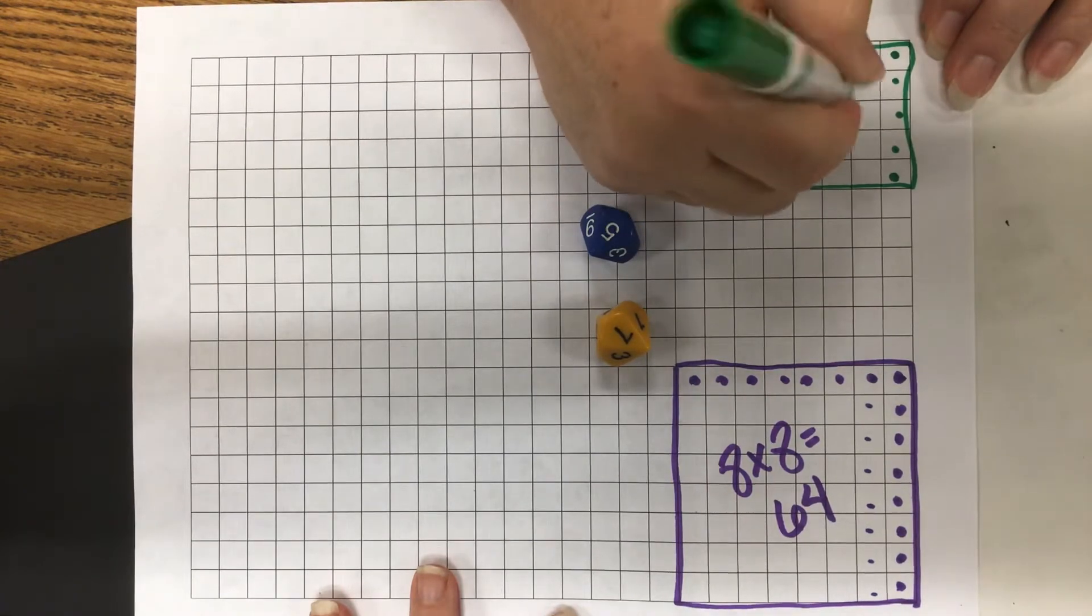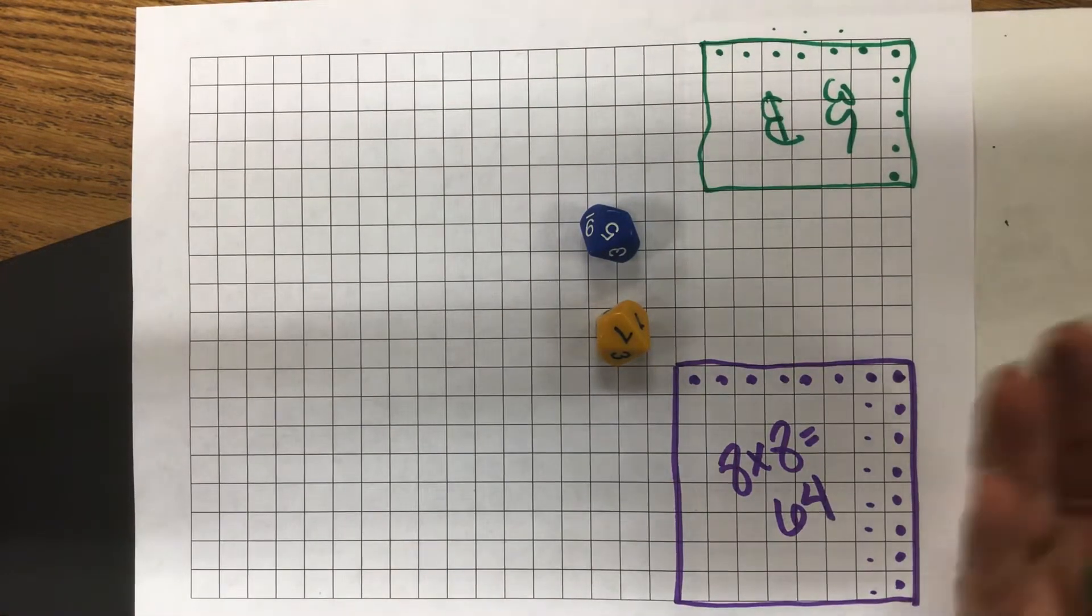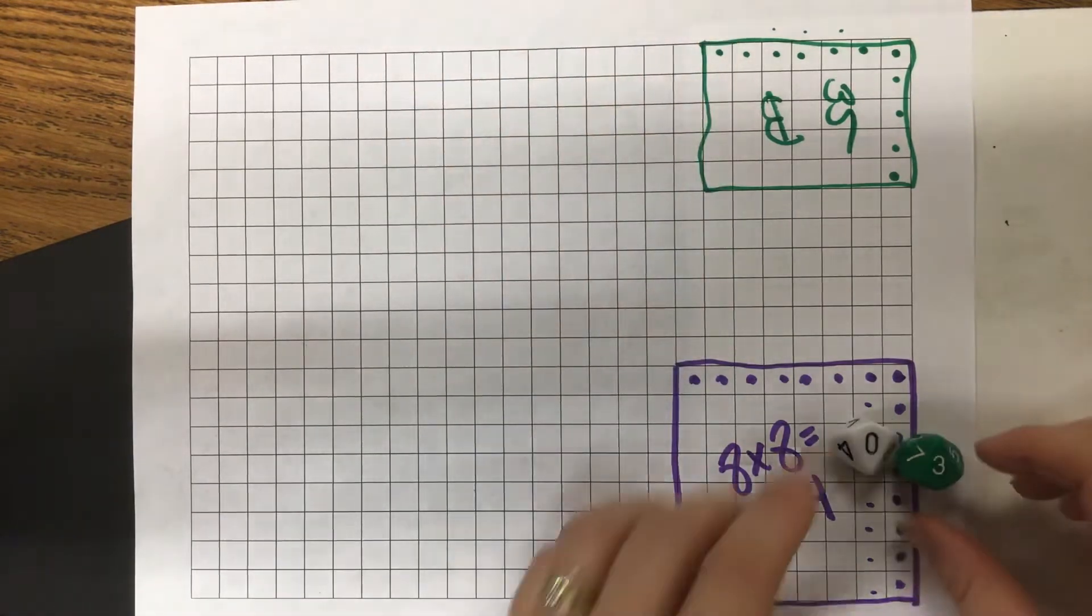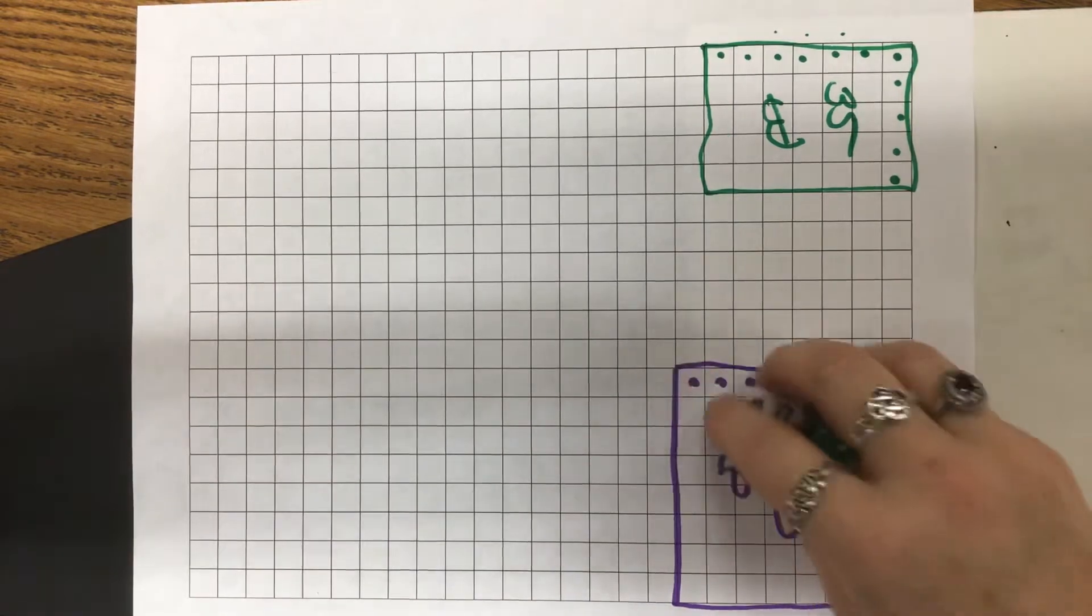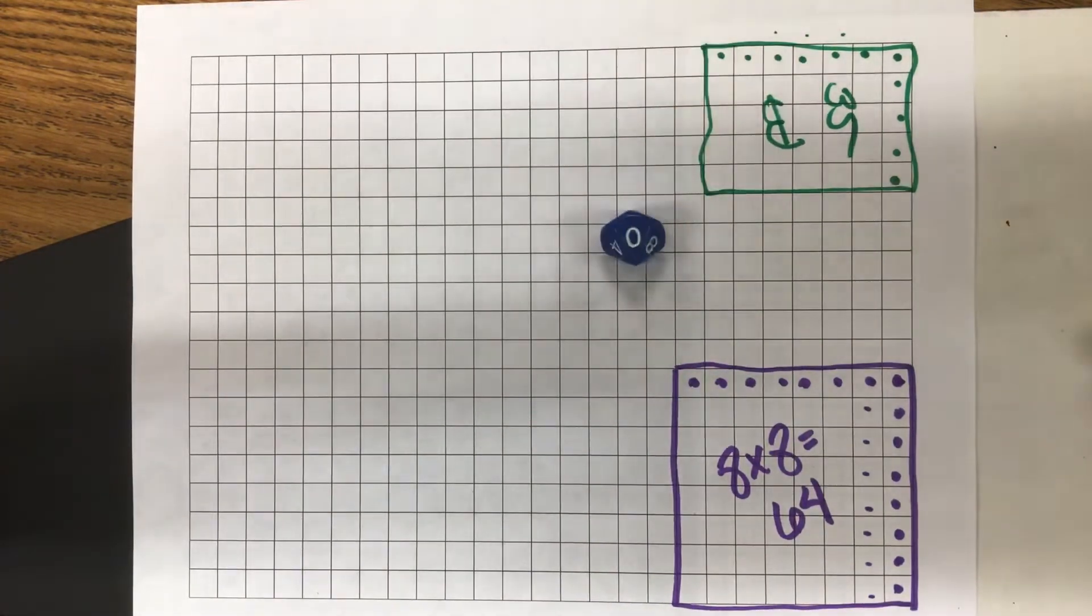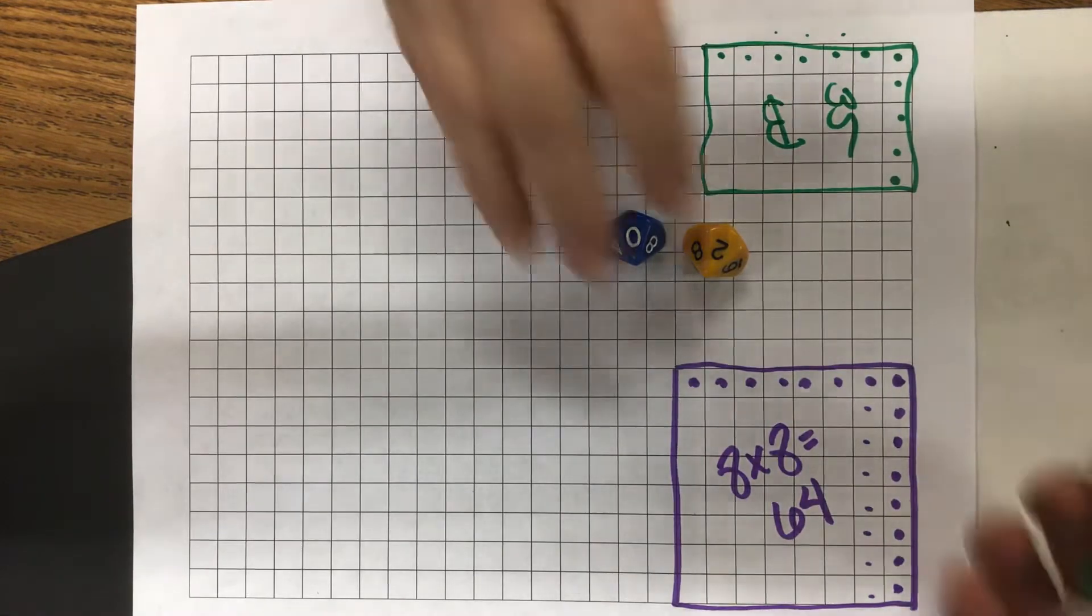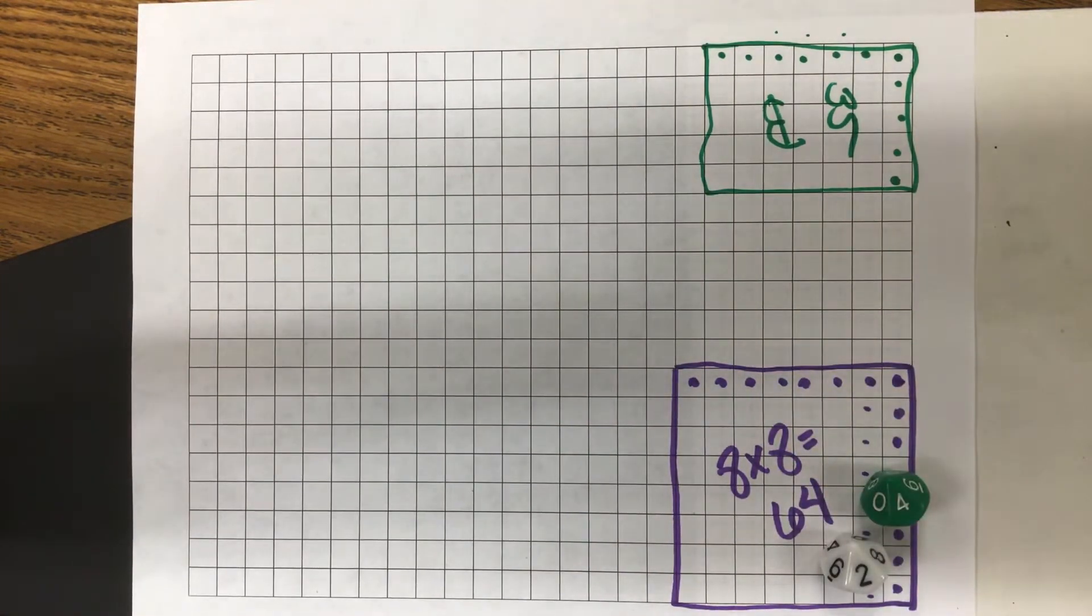Okay, it's my turn. I'm gonna roll my dice. Oh, wah wah wah, I have zero groups of three. If I roll a zero, I don't get to go. Okay, oh I got a zero too.